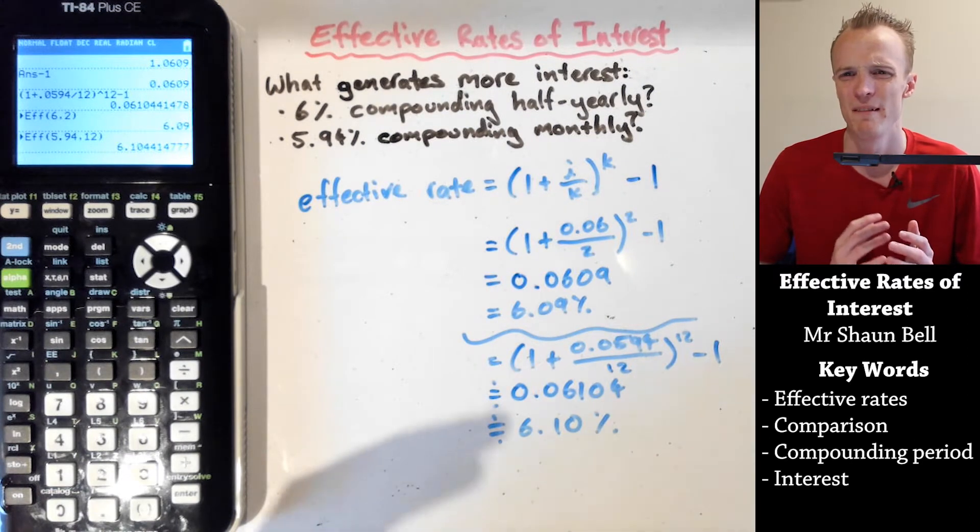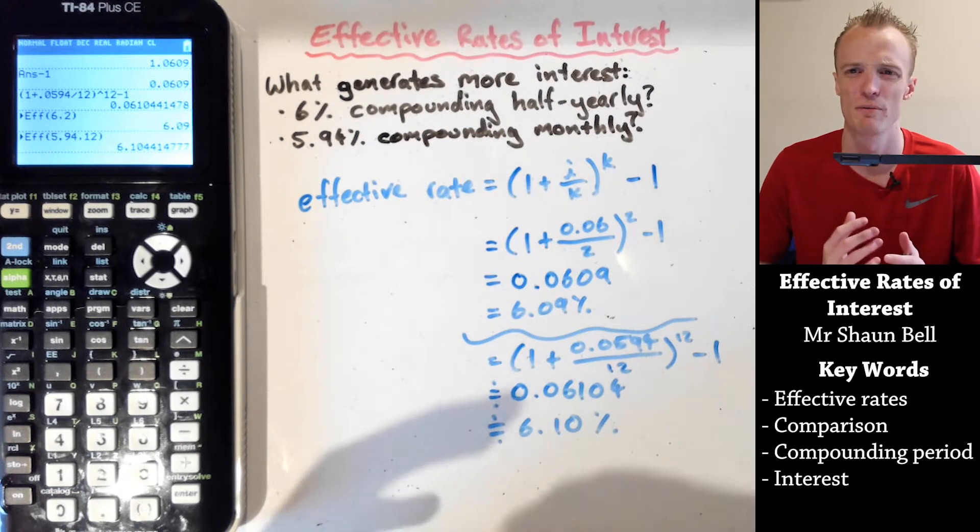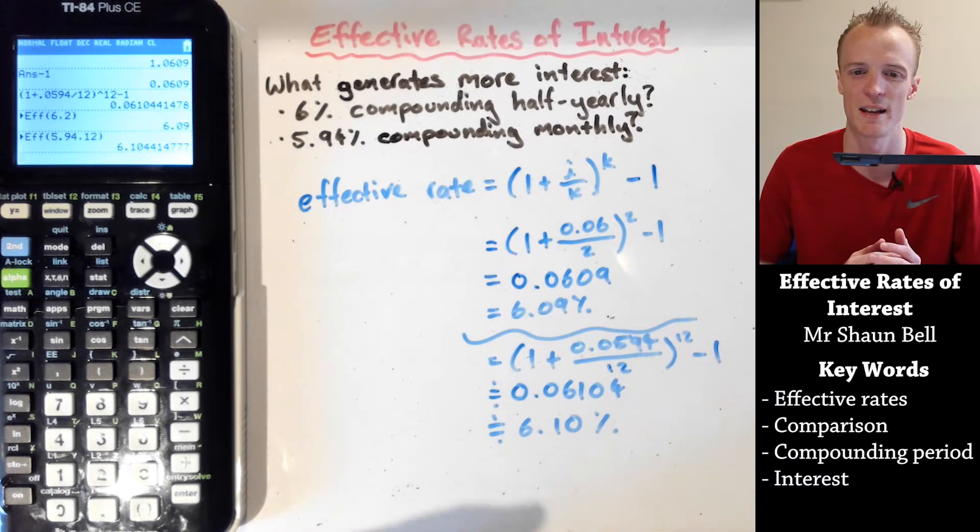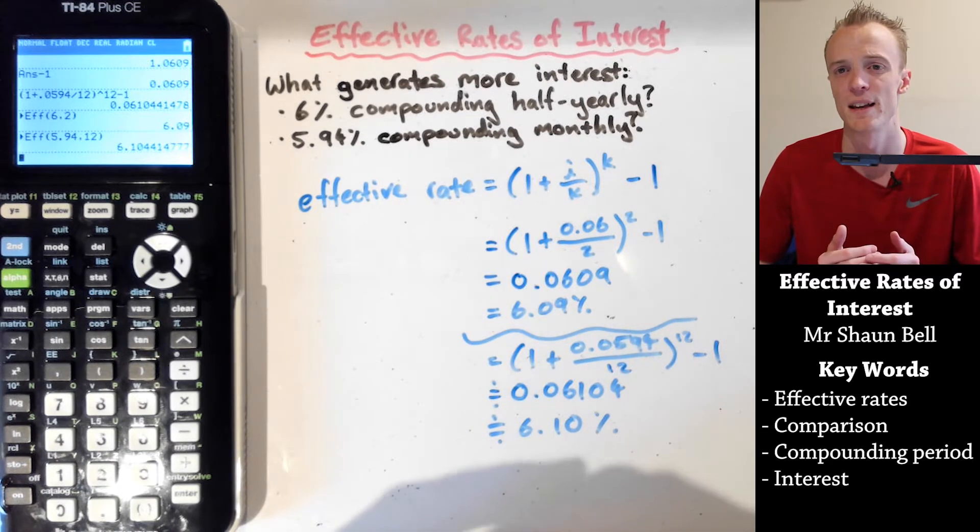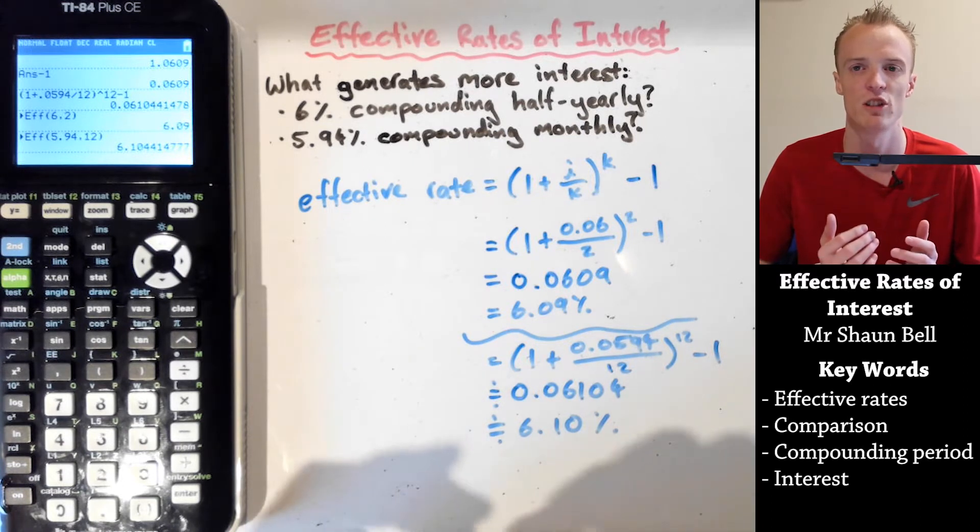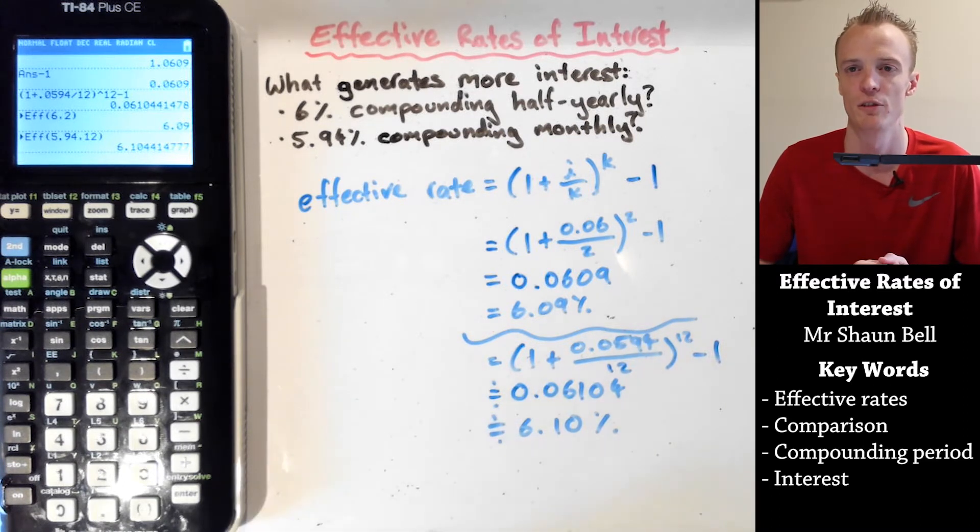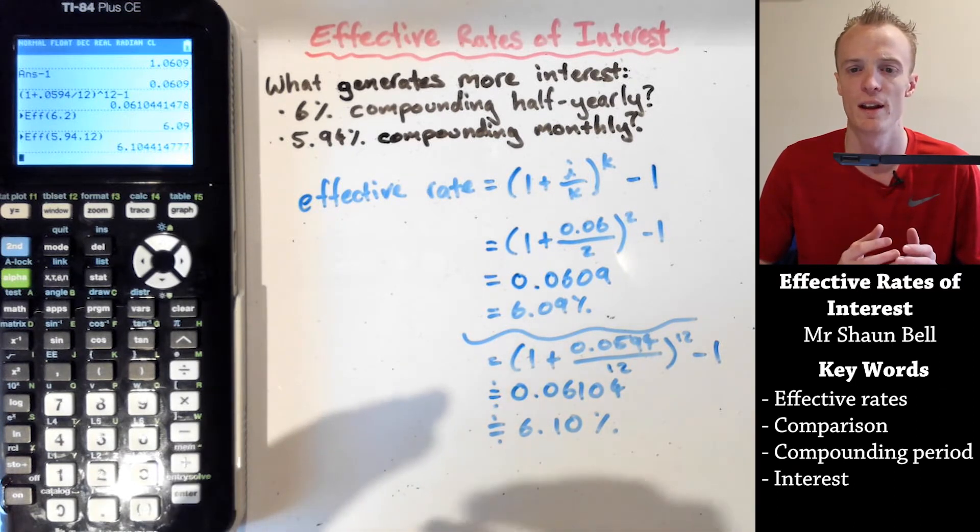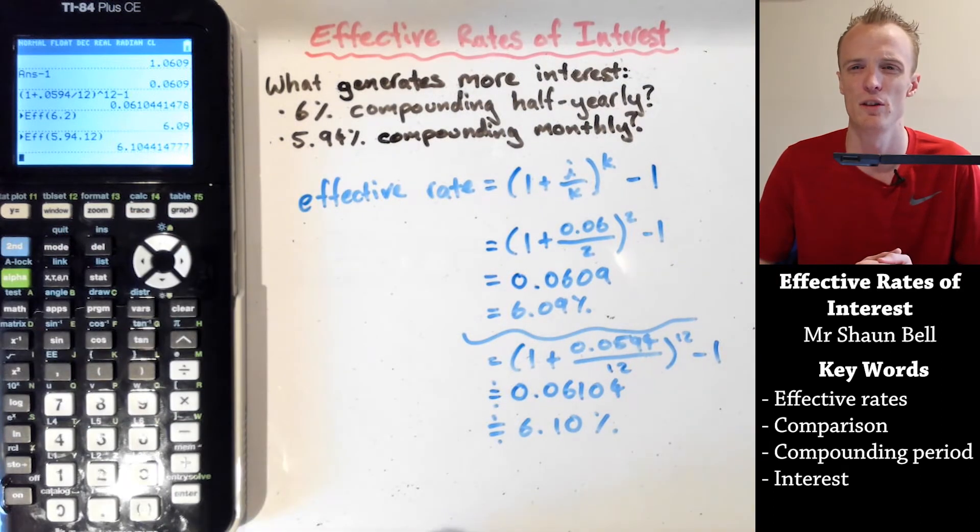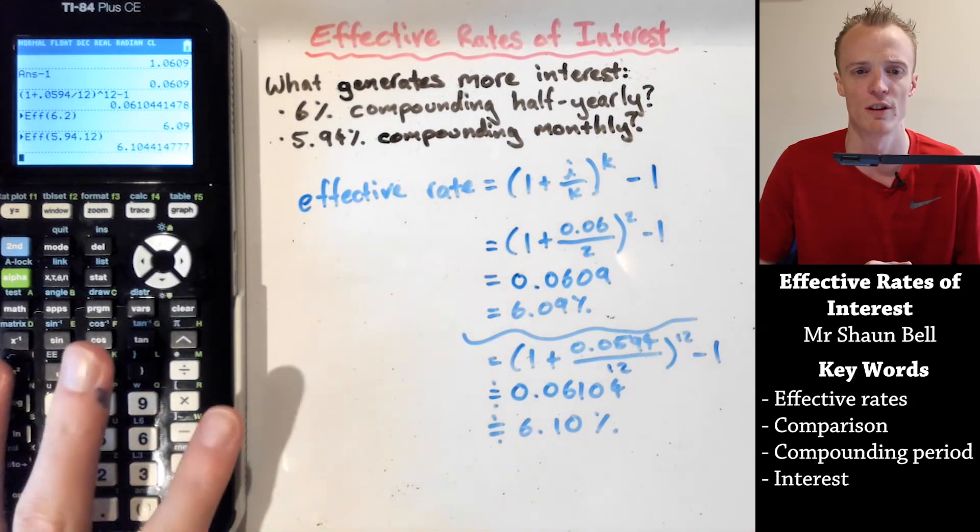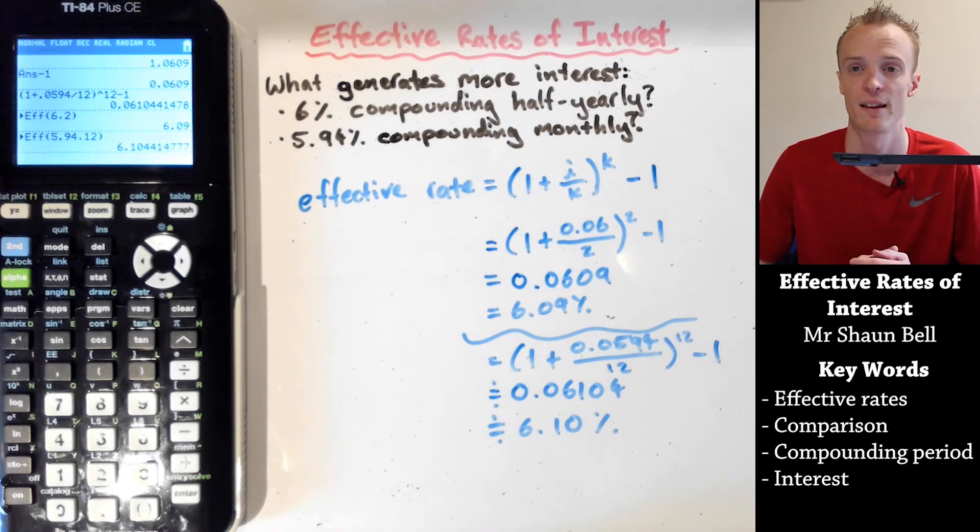So in summary, comparing different interest rate accounts can be very difficult just to take the percentage per annum and compare it that way, because the amount of times that it compounds per year can have a significant effect about which account generates the most interest. So in order to make a comparison, we need to work out the effective rate of interest, which can be calculated either by using this formula here, or by using that program that I've just shown in the TI-84 Plus CE calculator.